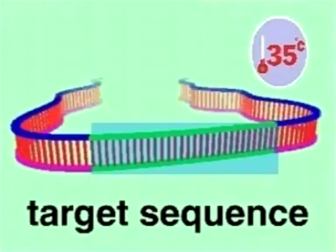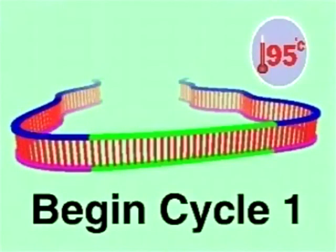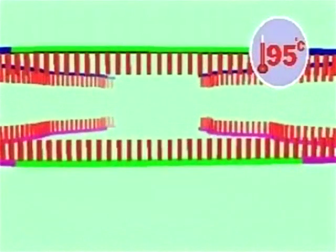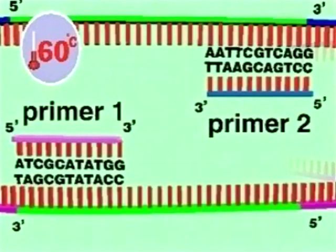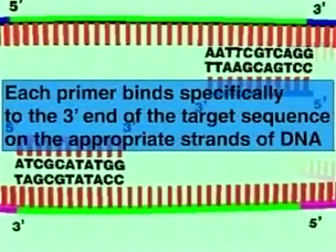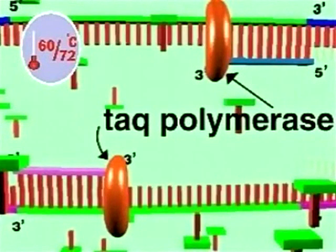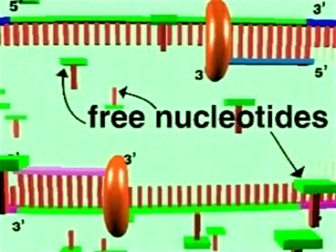We need to select a target sequence, depicted here in green color. In the first cycle of PCR, the temperature is raised to 95 degrees Celsius so that the two strands separate. On separation, the temperature is reduced to 60 degrees Celsius where a primer — a short oligonucleotide sequence — attaches at the 3' end of the target sequence. This is highly specific to the 3' end of the target sequence. The primers then direct Taq polymerase to synthesize the complementary DNA strand by adding free nucleotides.